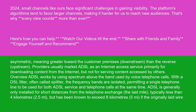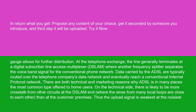ADSL is generally only installed for short distances from the telephone exchange — the last mile — typically less than 4 kilometers (2.5 miles), but has been known to exceed 8 kilometers (5 miles) if the originally laid wire gauge allows for further distribution. At the telephone exchange, the line generally terminates at a digital subscriber line access multiplexer, DSLAM, where another frequency splitter separates the voice band signal for the conventional phone network. Data carried by the ADSL are typically routed over the telephone company's data network and eventually reach a conventional internet protocol network.